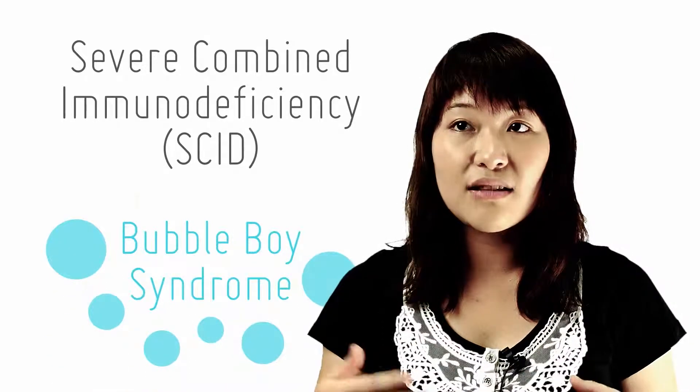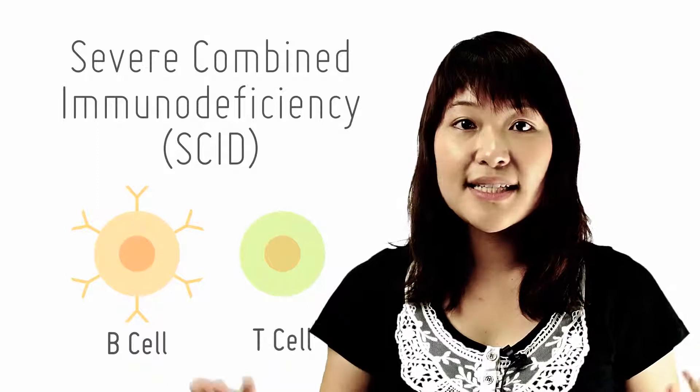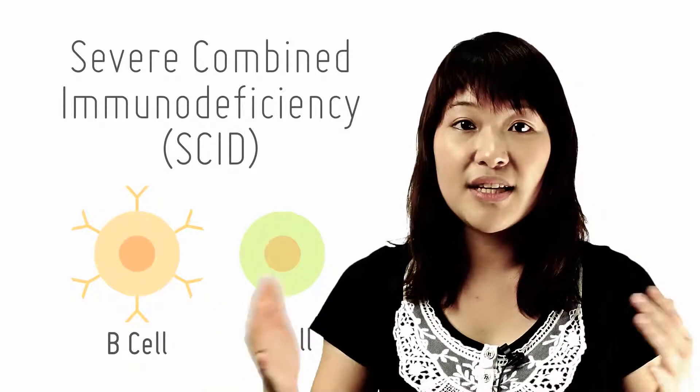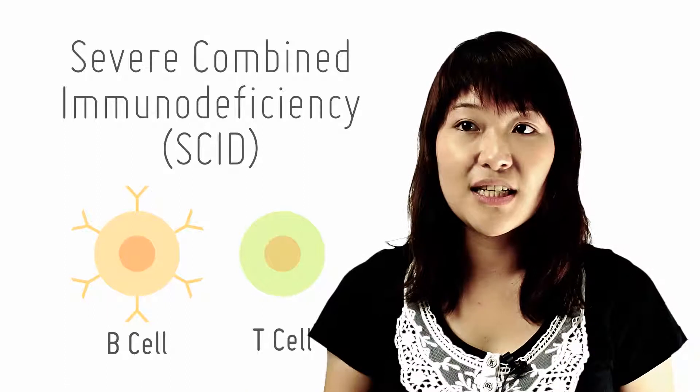the T and the B cell lymphocytes, which are specialized infection fighting white blood cells, are either reduced in numbers or malfunctioning.